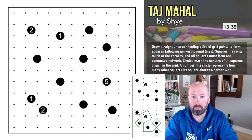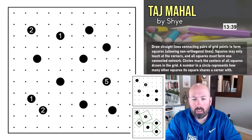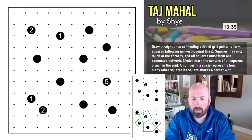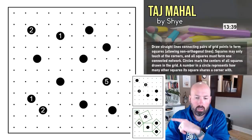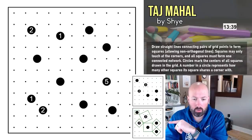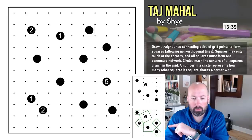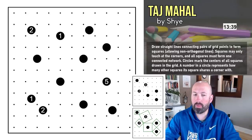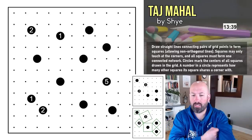All squares may only touch at the corners, and all squares must form one connected network — so they're all touching at corners and none can be a loner. Circles mark the centers of all squares, and a number in a circle represents how many other squares its square shares a corner with. So that three touches the one in the top left, the two, and the bigger one in the middle.